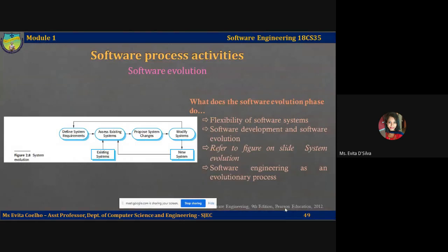Hi, in this lecture video, we're going to talk about the last software process activity, that is software evolution. The flexibility of software systems is one of the main reasons why more and more software is being incorporated in large complex systems.